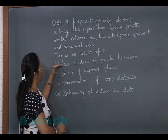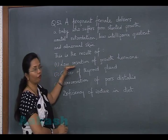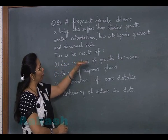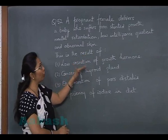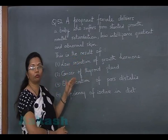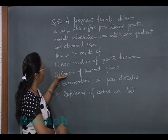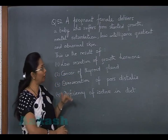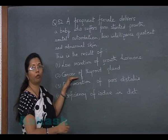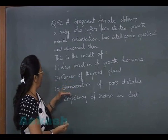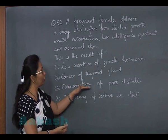Let's see the options. Option 1: low secretion of growth hormone — with low growth hormone there can be stunted growth, but it has nothing to do with mental retardation. Option 2: cancer of the thyroid gland — if it is thyroid cancer there will be hypersecretion. Option 3: over secretion of pars distalis.